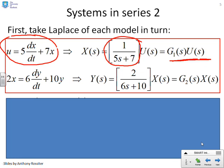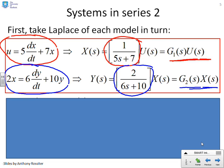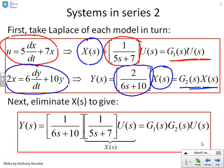For the second system, the equation is 2x equals 6 dy/dt plus 10y. Applying Laplace transforms gives Y of S equals G2 times X of S, where G2 has the transfer function 2 over 6s plus 10. The key thing to note is that we have an X of S in both expressions, so we can simply substitute one into the other to eliminate X of S. This gives us Y of S equals G1 of S times G2 of S times U of S.